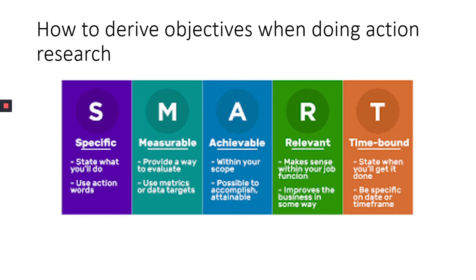Achievable within your scope means: if you are a nurse, do something that relates to your career. If you are a community health practitioner, do something that relates to community health. If you are an orthopedic and trauma practitioner, do something within your training. If you are an HSSM person, do something that relates to that training and capability. Relevant means it makes sense within your job function and improves the institution in some way — it should not be beyond your scope or bring no value.